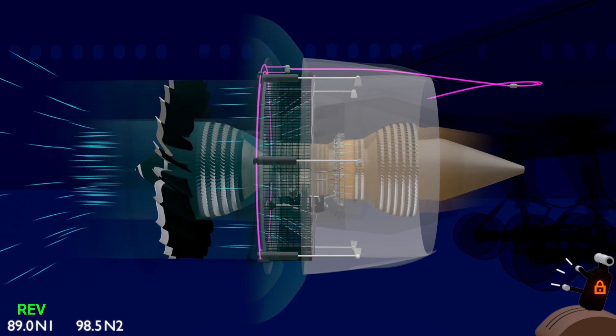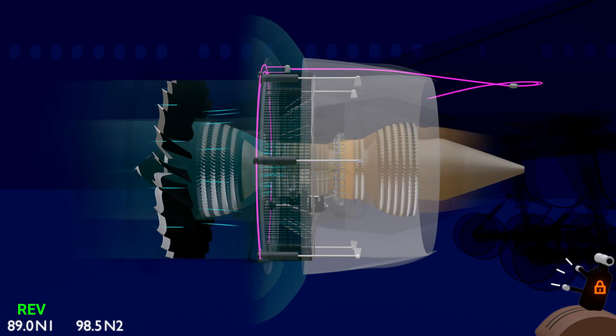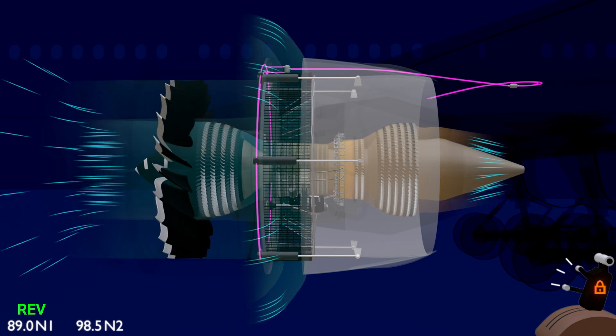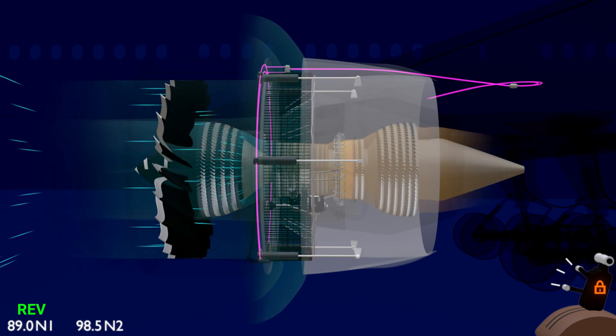However, the entire engine thrust is not reversed. The core airflow continues to produce the forward engine thrust. Thrust reversers supplement the aircraft braking system in stopping the aircraft after landing, especially in wet runway conditions.